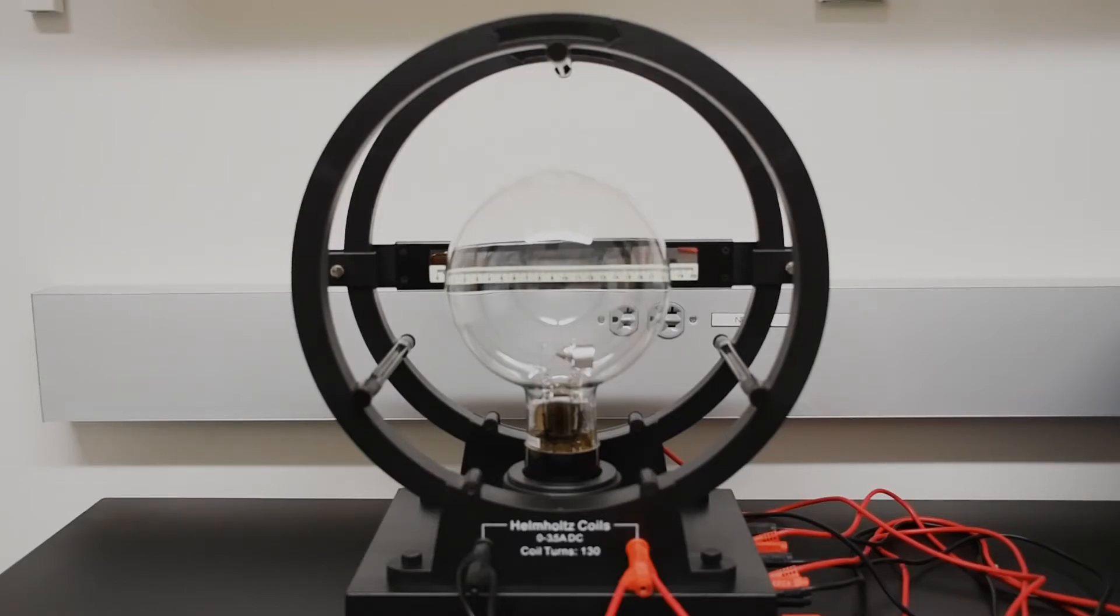So I haven't changed anything from the video that we just saw. We're accelerating electrons at 100 volts, and we're applying 2 amps to those Helmholtz coils. You can't see the gas glow right now because of the room lights. So I'll turn the room lights out, and now you can see the path of the electrons in the gas.